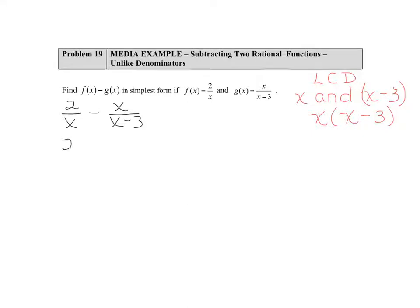We're going to take each of our fractions one at a time and build them up so that they have the common denominator of x times x minus 3. We want to compare the denominator that we have, x, with the new one, x times x minus 3, and we can see that the new part here is the x minus 3.